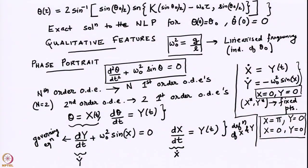In the last video, we had looked at the exact solution to the nonlinear pendulum. We had written down the exact nonlinear equation and solved it using elliptic functions, expressing it in a rather complicated looking function involving an SN inverse and within the square brackets there is the elliptic SN.